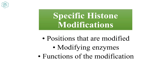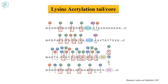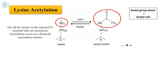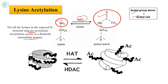Now we will see specific histone modifications — the positions which are modified, the modifying enzymes, and the functions of the modifications. Beginning with lysine acetylation of the tail or core: not all lysines in the terminal tails are acetylated; acetylation occurs in a non-random manner. The amino group is acetylated by histone acetyltransferase, with acetyl-CoA as the acetyl group donor. When this happens, there is a loosening of the nucleosome because acetylation neutralizes the positive charge of lysine.